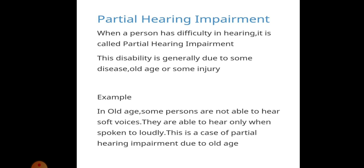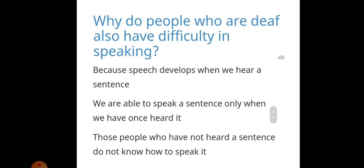For example, in old age some people are not able to hear soft voices. We have to speak loudly with elderly people so they can hear. If we speak softly, they cannot hear — they are able to hear only when spoken to loudly. This is a case of partial hearing impairment due to old age.